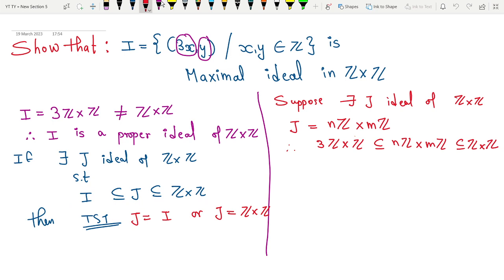Now, from this, what I can observe, if this relation is true, that means my 3Z is a subset of nZ and my Z is a subset of mZ.